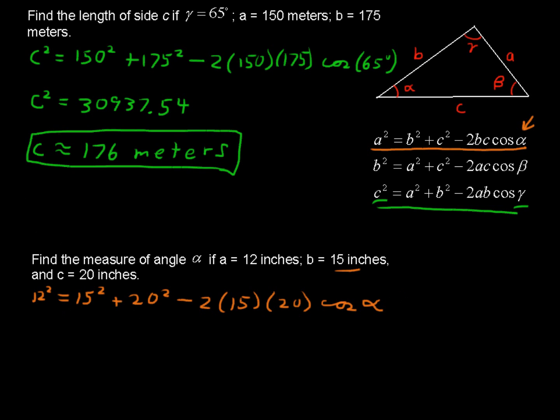Okay, now, getting right to this, we have 144 equals 225 plus 400 minus 600. I'll write that down. 144 equals 225 plus 400 minus 600 cosine of alpha. Subtract the 225 and 400 from each side, and you get negative 481 equals negative 600 cosine alpha.